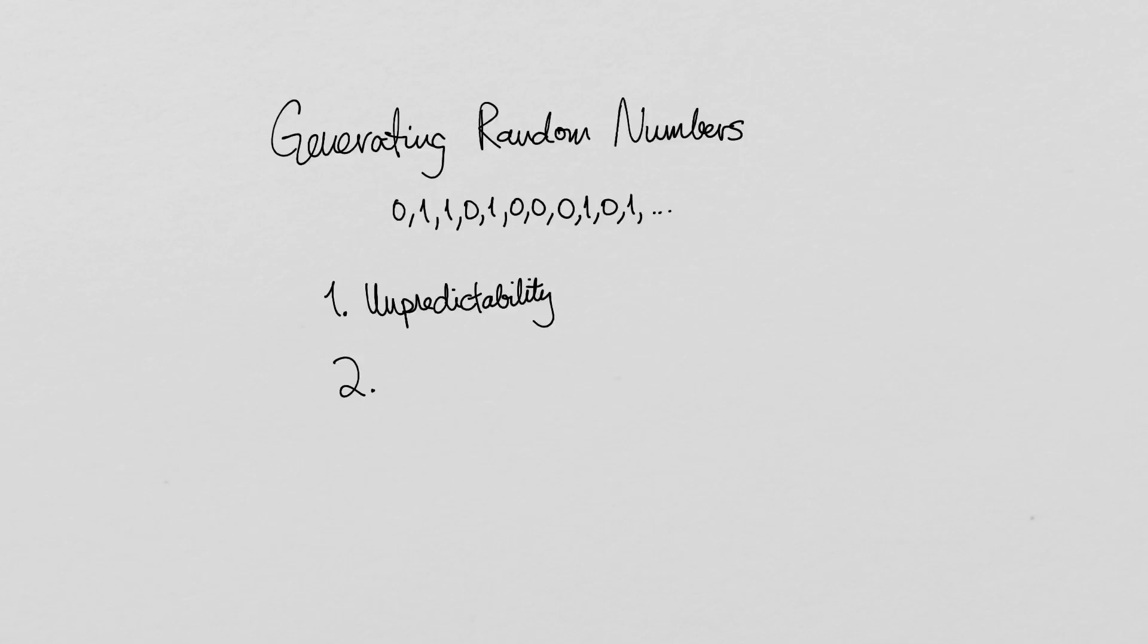Second, speed. We often need a very large supply of random numbers, so a slow generating process could easily make certain algorithms infeasible.